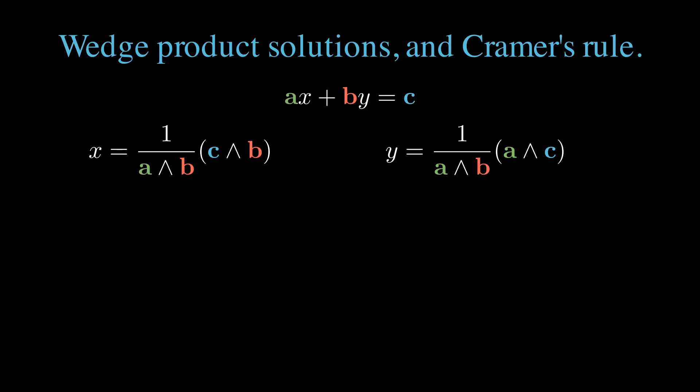We can write out a bi-vector, for example, a wedge b, in component form. In R2, this simplifies down to a single determinant, the determinant of the vector components of a and b, all times the unit bivector e1, e2.